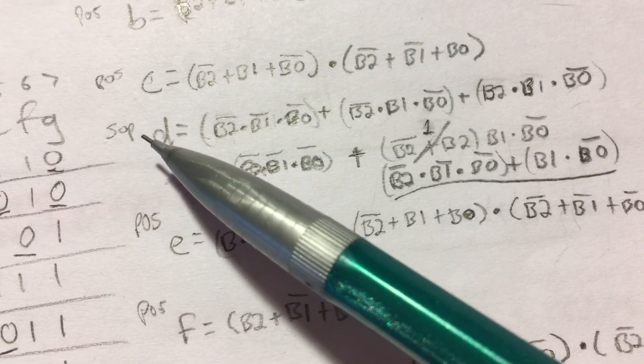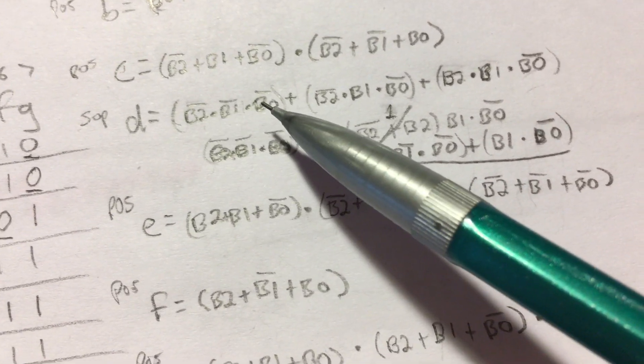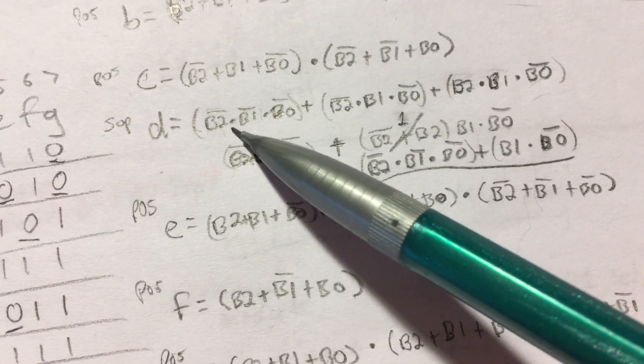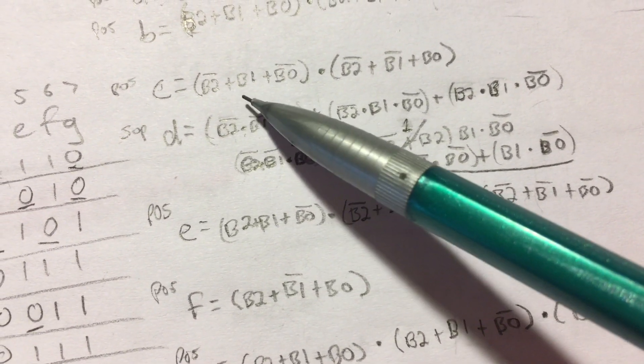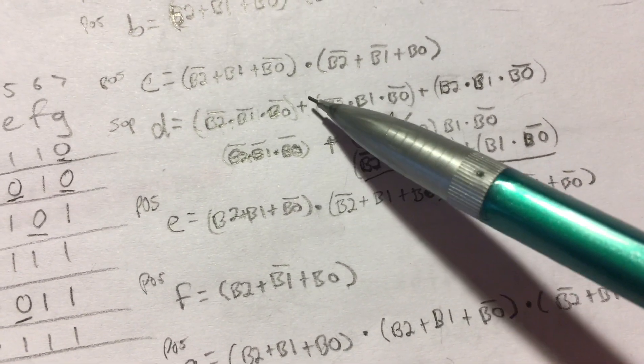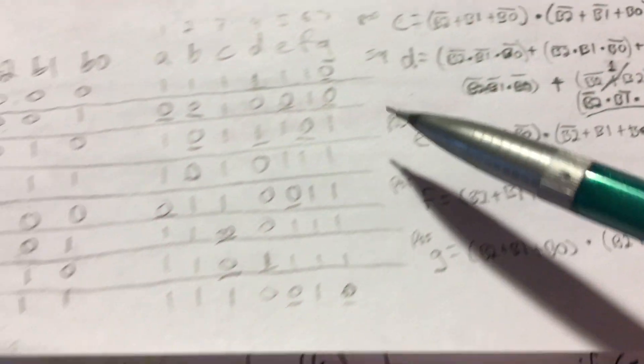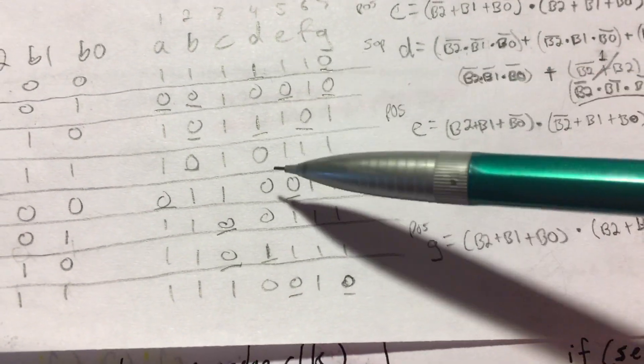Also, it is sum of products. One product, two product, sum of those. Remember, this is the multiplication symbol, which is AND. This is the addition symbol, which is OR. Sum of products, where you map the ones, invert the zeros.